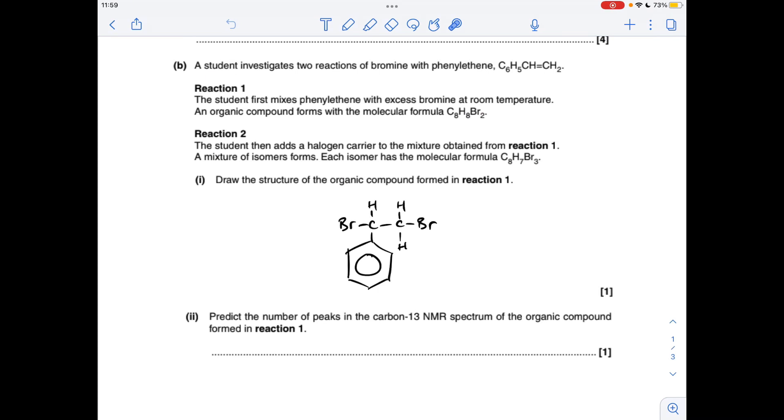So the structure of the organic compound formed in reaction one - the bromine molecule is going to add across this carbon-carbon double bond and it's going to give us that.